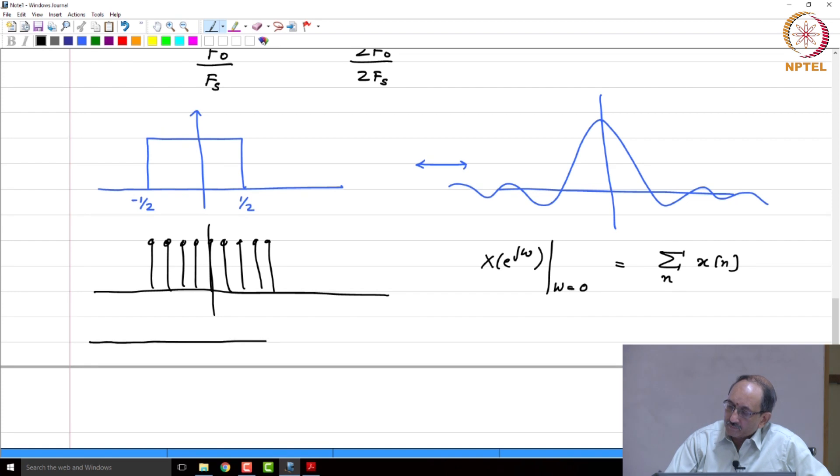And you will get a certain number assuming you have sampled like this. Now, on the other hand, if you now sample this at a much denser rate, if you sample this at a much higher sampling frequency, between minus half and plus half, if you sample it at twice the frequency compared to earlier, you will get twice the number of samples.